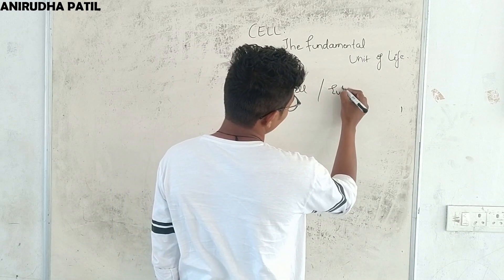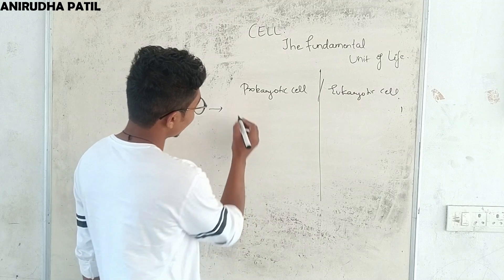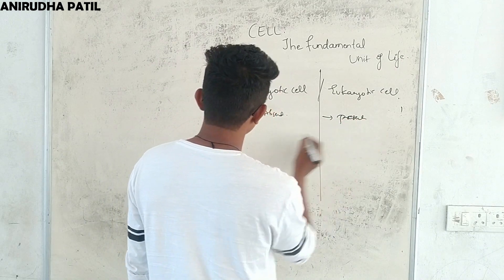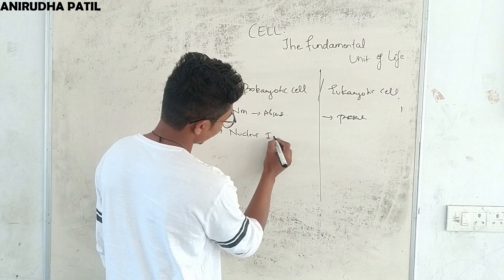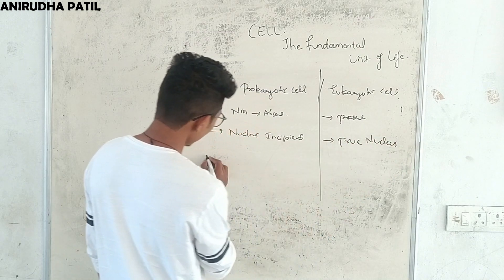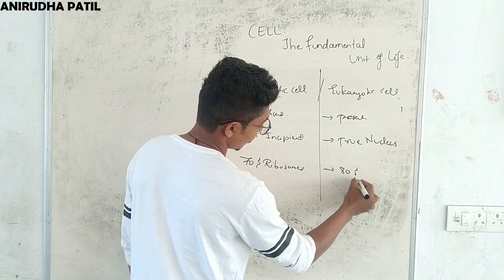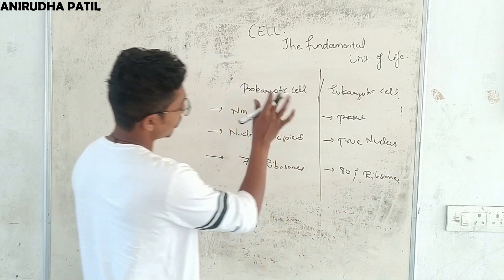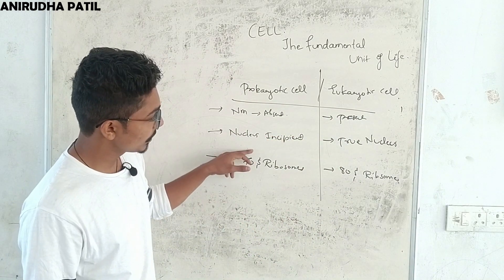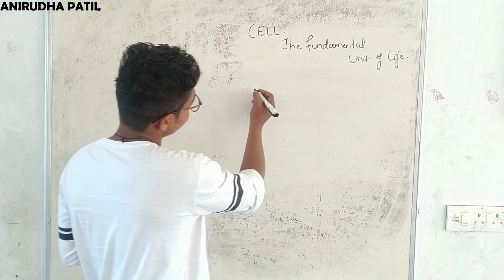Now let's see the difference between prokaryotic and eukaryotic cells. In prokaryotic cells, the nuclear membrane is absent, whereas in eukaryotic cells it is present. In prokaryotic cells, the nucleus is incipient (not well-defined), while eukaryotic cells have a true nucleus. Prokaryotic cells have 70S ribosomes and eukaryotic cells have 80S ribosomes.